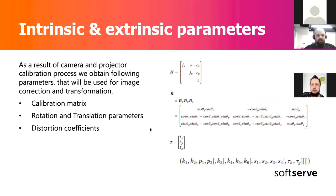The next parameter is the rotation matrix, or rotation vectors in our case, because to get the matrix we need to apply the Rodrigues formula. It describes how the world plane — our calibration plane — is rotated with respect to the camera.